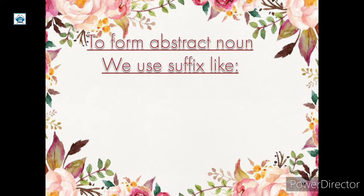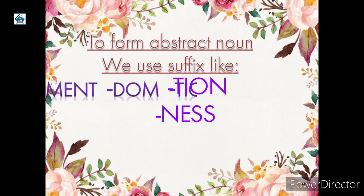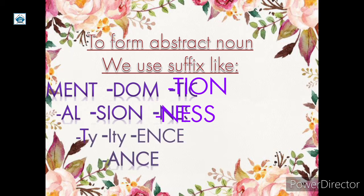Now, there are some suffixes which you need to use to form an abstract noun. Suffixes are added at the last of the word. For example, you need to add: MENT, DOM, TION, AL, SION, NESS, TY, ITY, ENCE, ANCE. Whenever you see any noun, you need to add these suffixes to form an abstract noun.